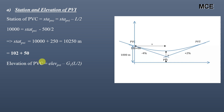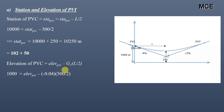The elevation of PVC equals the elevation of PVI minus g1 times L/2. The elevation of PVC is 1000 meters, g1 is minus 0.04, and L is 500 meters. Solving for the elevation of PVI: 1000 − (−0.04 × 250) = 1000 − (−10) = 990 meters. So the elevation of PVI is 990 meters.